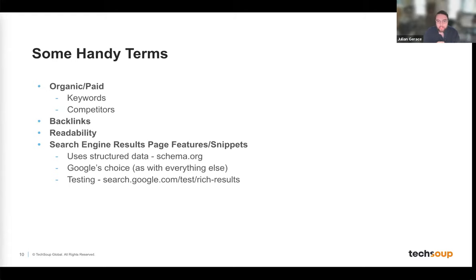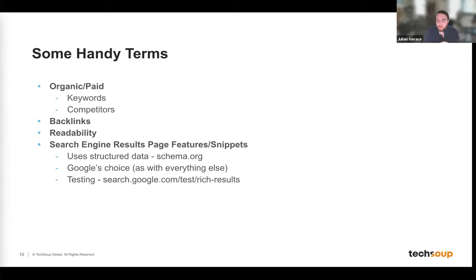SERP features can be frustrating because the only person that really benefits is Google — they benefit from content everyone puts on their websites, but those websites don't get the traffic. There are desirable and undesirable snippets. The basics for all of them use structured data — you can learn more at schema.org. It's Google's choice; there's no way to say 'I want this to show up exactly this way.' Google ultimately decides what's shown, even for meta descriptions.